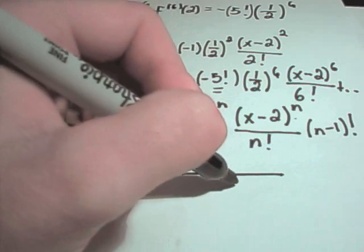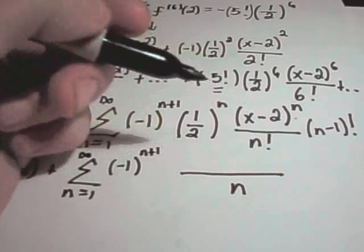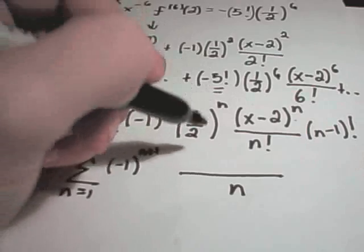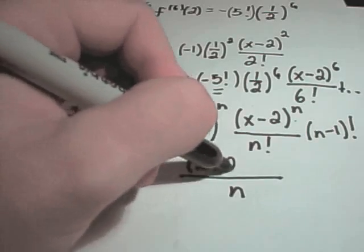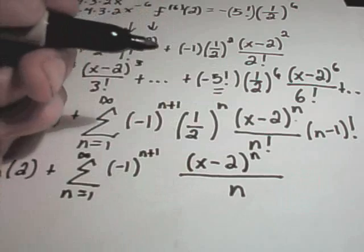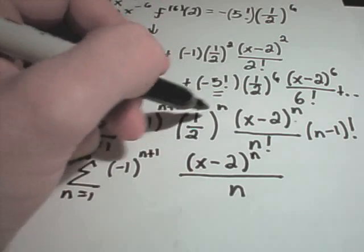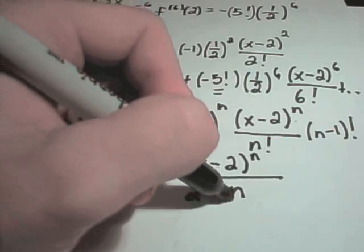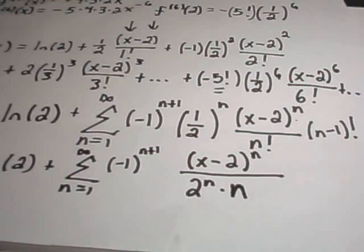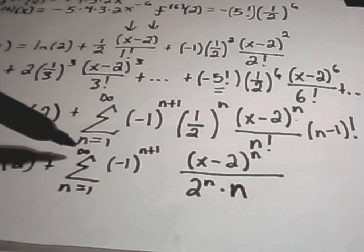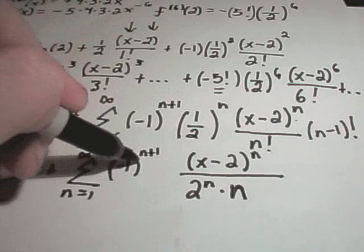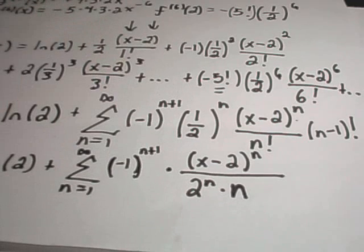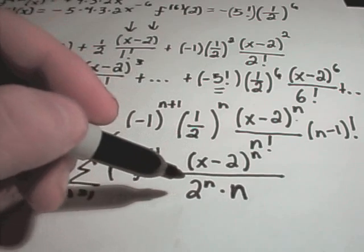So, let's see, I could write n minus 1 factorial over n factorial. That actually just simplifies down to n. You can write that out and play with factorials and convince yourself of that. It looks like I've got an x minus 2 to the n power on top. Well, I'm going to simplify my 1 half to the n. 1 to the n is 1, 2 to the n is 2 to the n. So, I think this would be a more compact way of writing it. ln of 2 plus the summation from 1 to infinity. You have your negative 1 to the n plus first power. And, then, in the numerator, I'm going to have x minus 2 to the n power. And, then, in the denominator, I'll have 2 to the n times n.